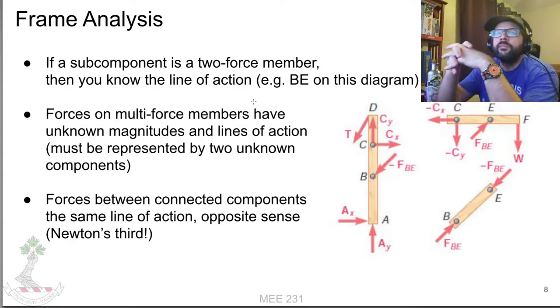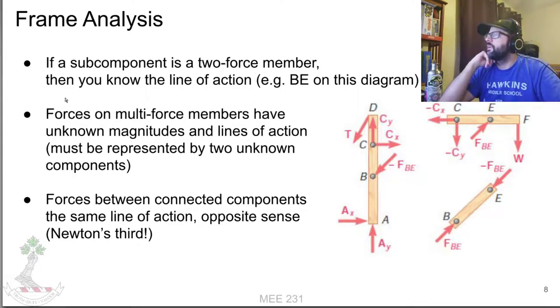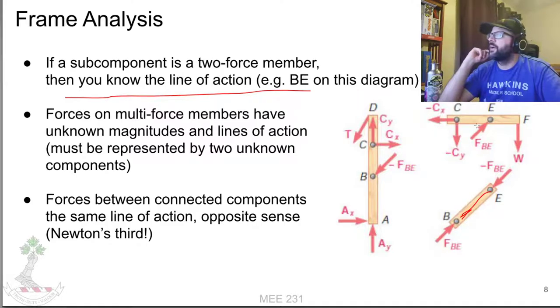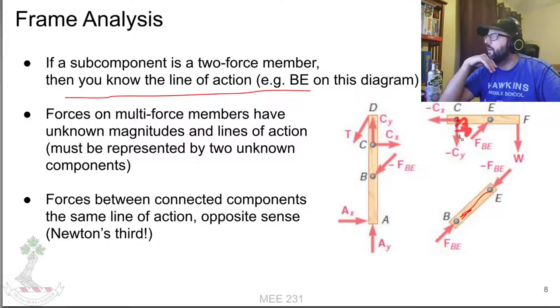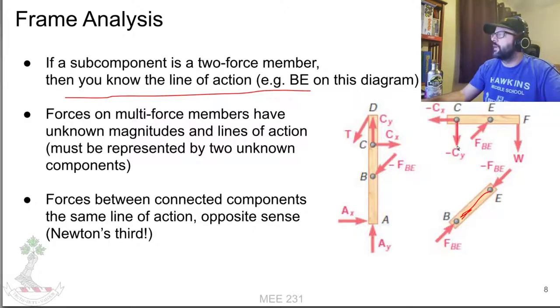If we know it's a two-force member, we know the direction. For any of the others, we don't know the line of action for any of the other connections. If you have a multi-force member connected to a multi-force member or to a support, it's going to have unknown reactions in both the X and Y direction, and Z too if we're working in 3D. Depending on support, you may also have a moment if that's a fixed connection.